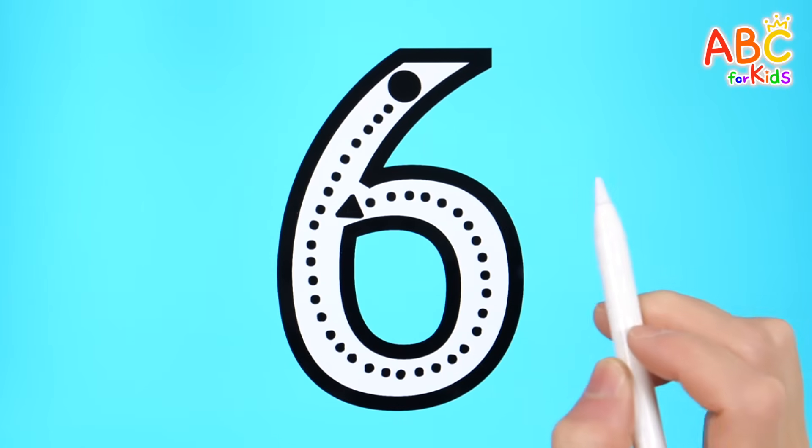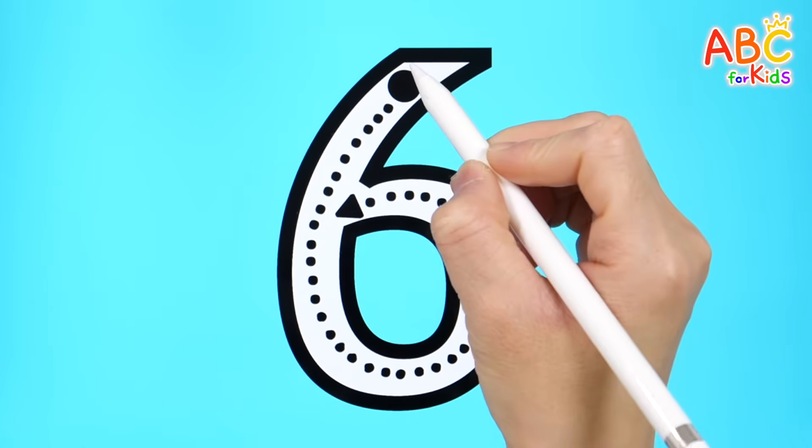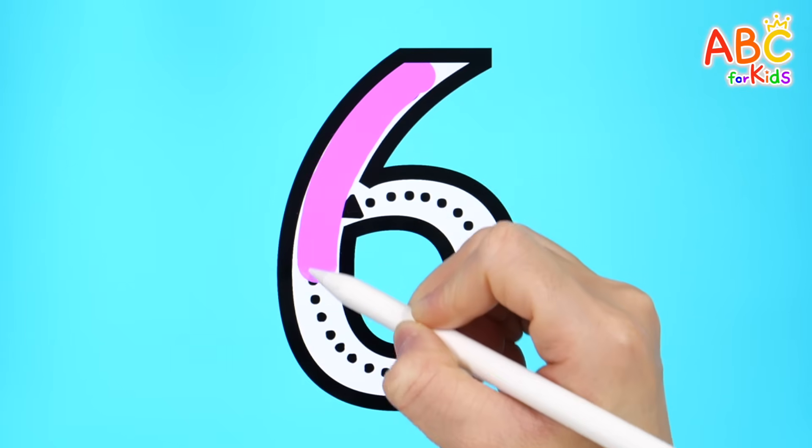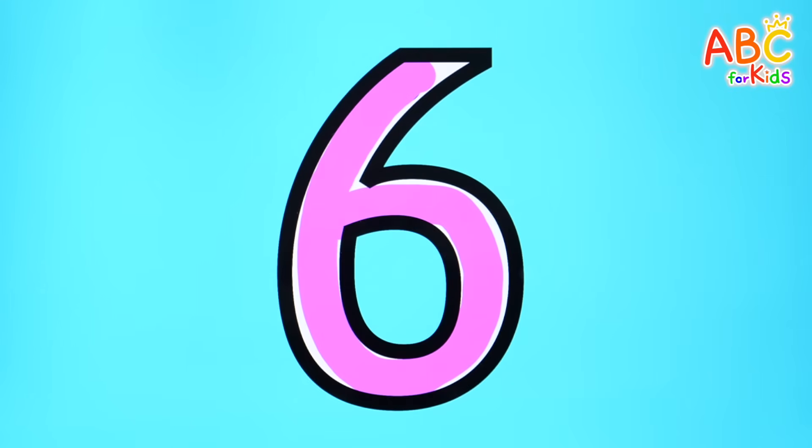Let's trace the dotted line from the circle to the triangle to write number six! Eight, nine, ten! Six! Six! Very good!